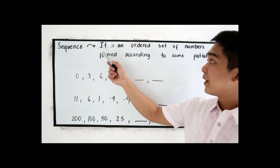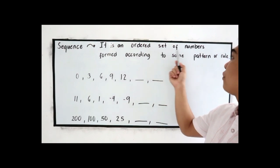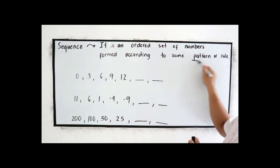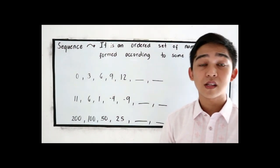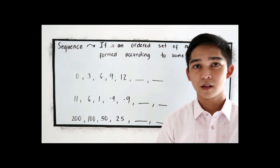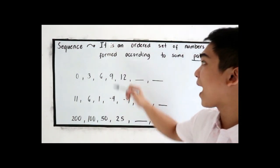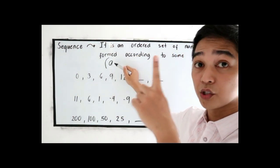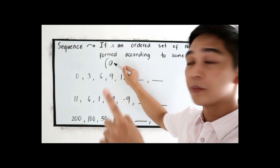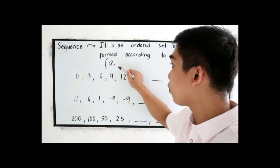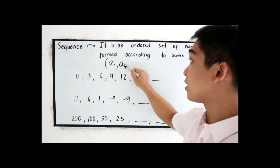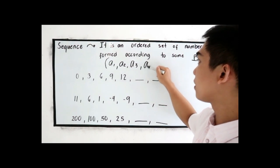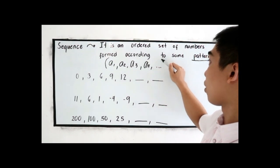A sequence is an ordered set of numbers formed according to some pattern or rule. Sequence is all about the pattern or rule. It is denoted by terms: for the first term we have A1, for the second term A2, for the third term A3, for the fourth term A4, and so on.